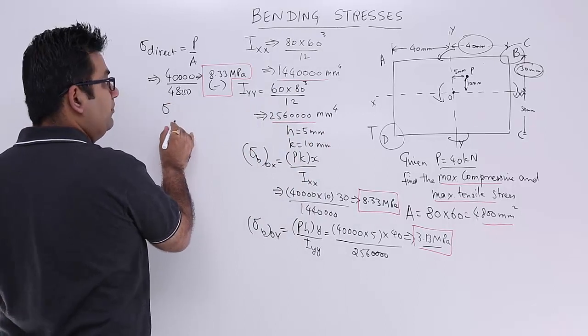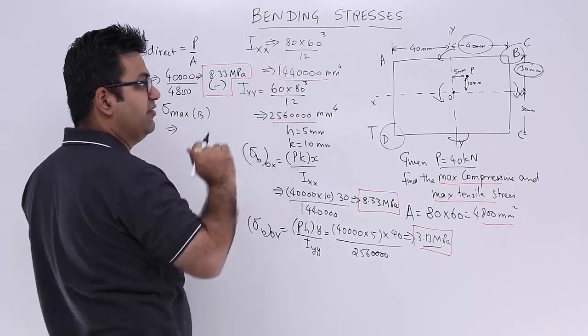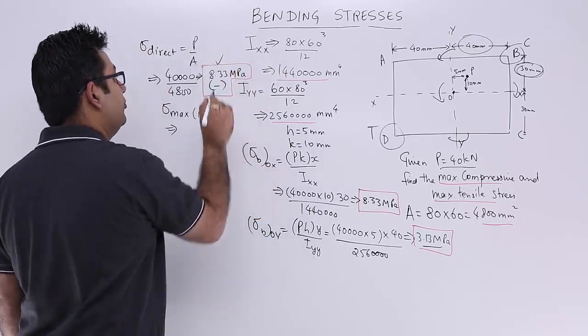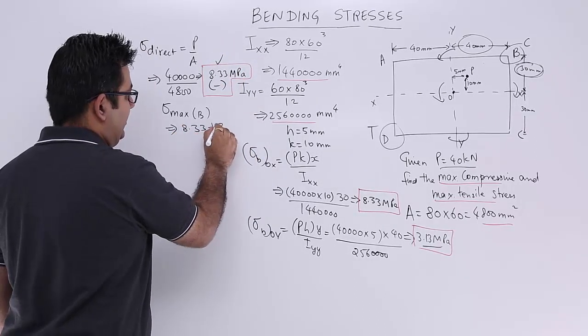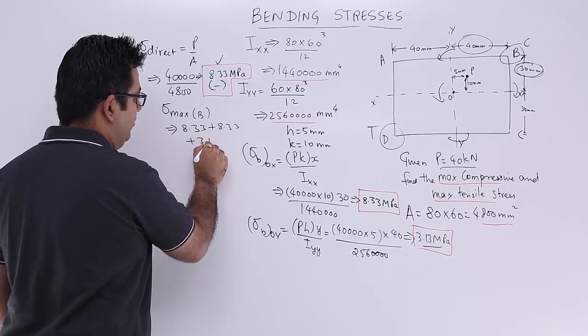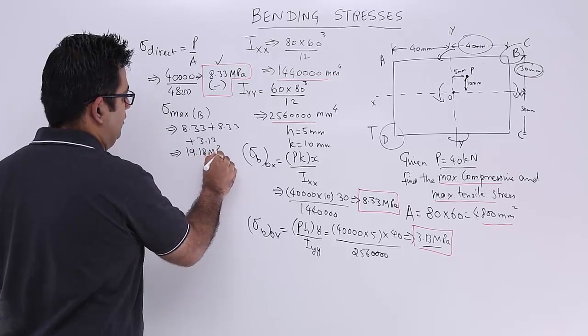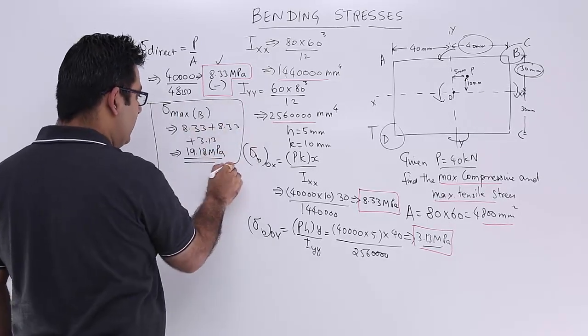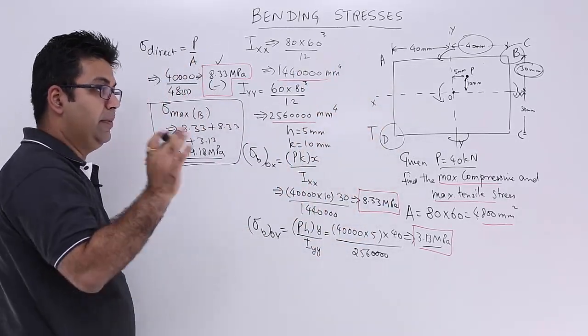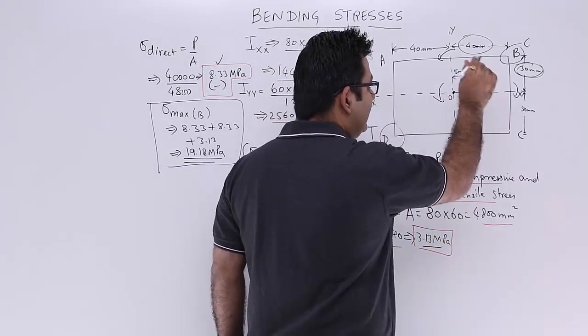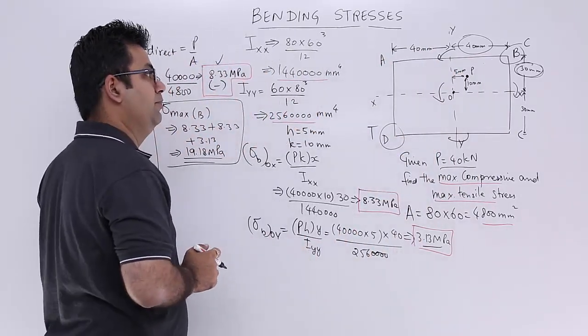So sigma maximum at point B. It is all compressive in nature. So this negative value will also be taken as positive because it is all compressive. 8.33 plus 8.33 plus 3.13. This gives you 19.18 MPa. So this is the maximum compressive stress that is produced in this section, and that is at point B. So if you remember this rule, when you have eccentric loading case, the maximum stress will always occur in the same quadrant as that of the load.